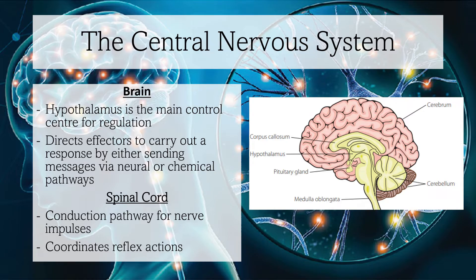The central nervous system is integral to the maintenance of homeostasis. The brain is the main control center of the body, but within the brain is a small area called the hypothalamus, which is the control center for the regulation of many activities in the body required to maintain a stable internal environment. It achieves this by directing effectors to carry out a response by either sending messages via neural or chemical pathways.